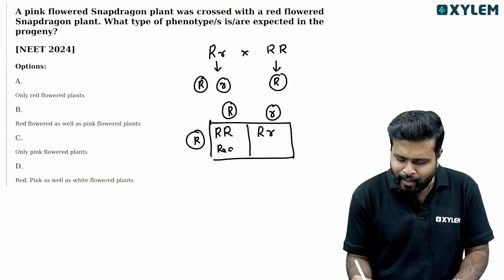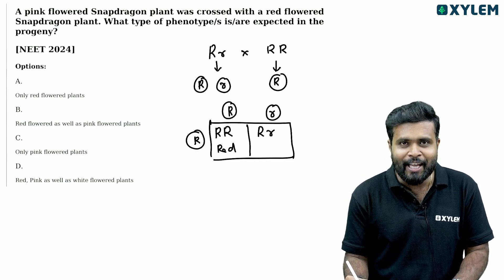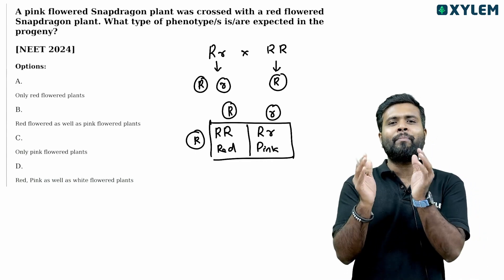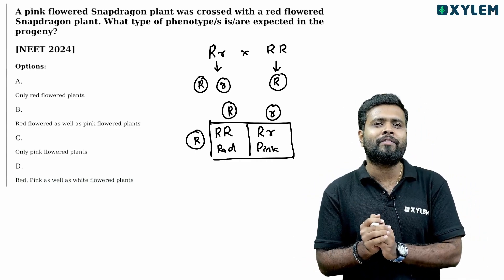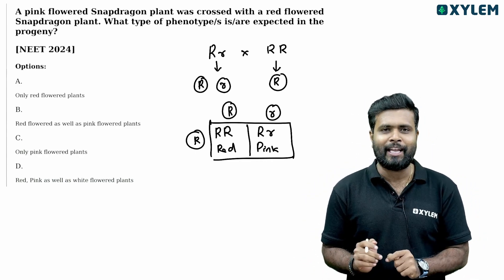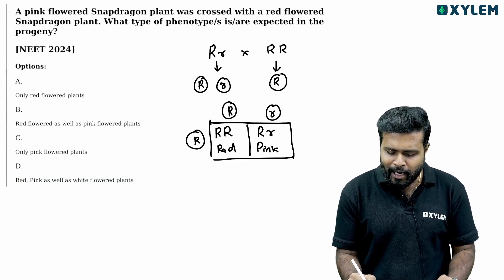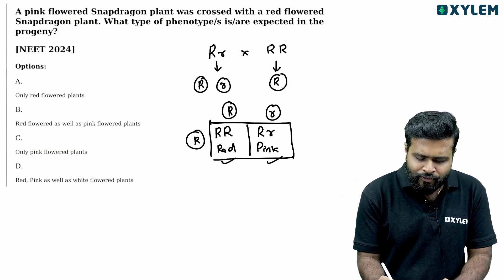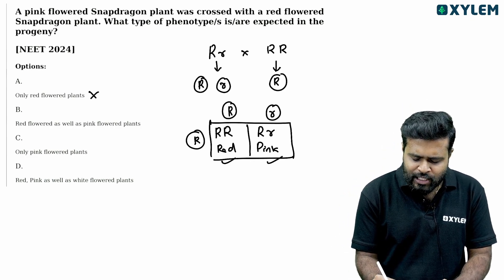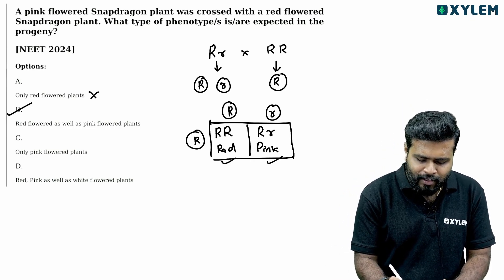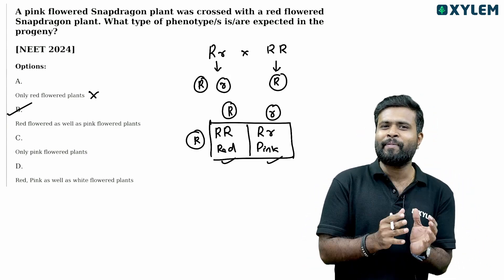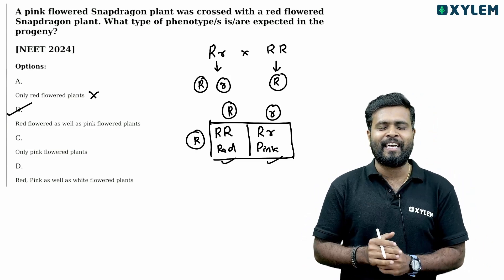The results show red and pink flowers. Only red flowered, or red flowered as well as pink flowered plants. Option B is the right answer: red flowered as well as pink flowered plants.